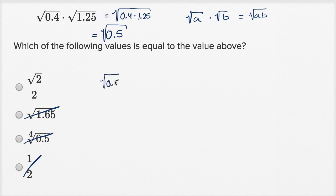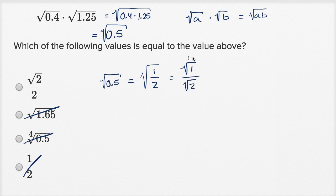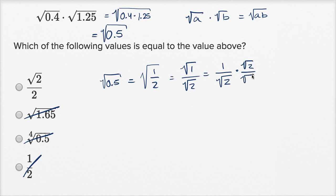The square root of 0.5 is the same thing as the square root of 1/2, which equals the square root of 1 over the square root of 2. The square root of 1 is just 1, so it's 1 over the square root of 2. We can rationalize the denominator — a lot of folks don't like dividing by an irrational number — so we multiply both the numerator and the denominator by the square root of 2. We get square root of 2 in the numerator, and square root of 2 times square root of 2 equals 2 in the denominator. So the square root of 0.5 is indeed equal to the square root of 2 over 2.